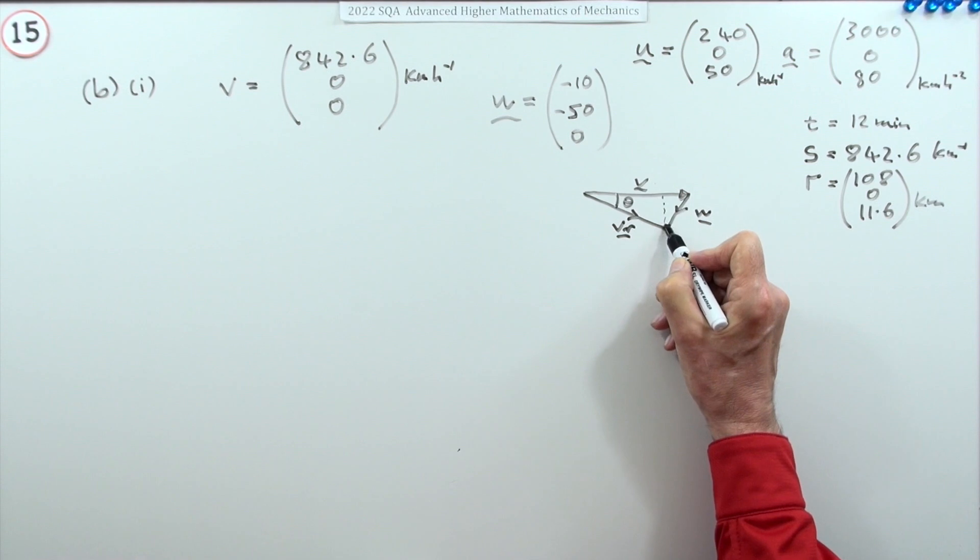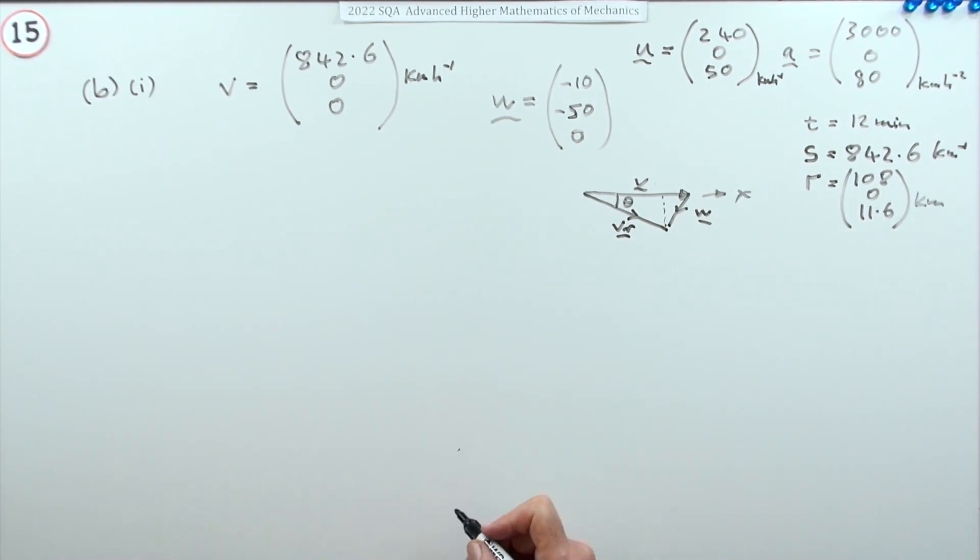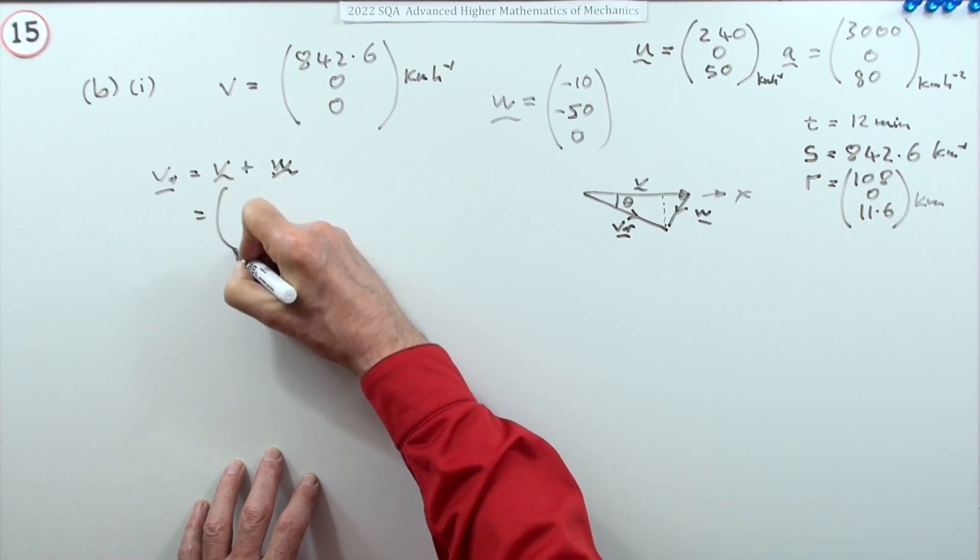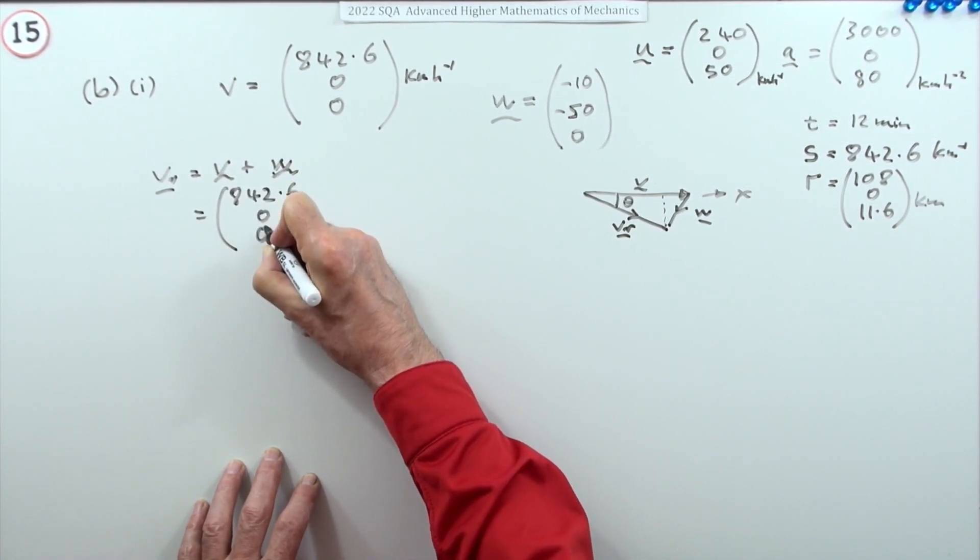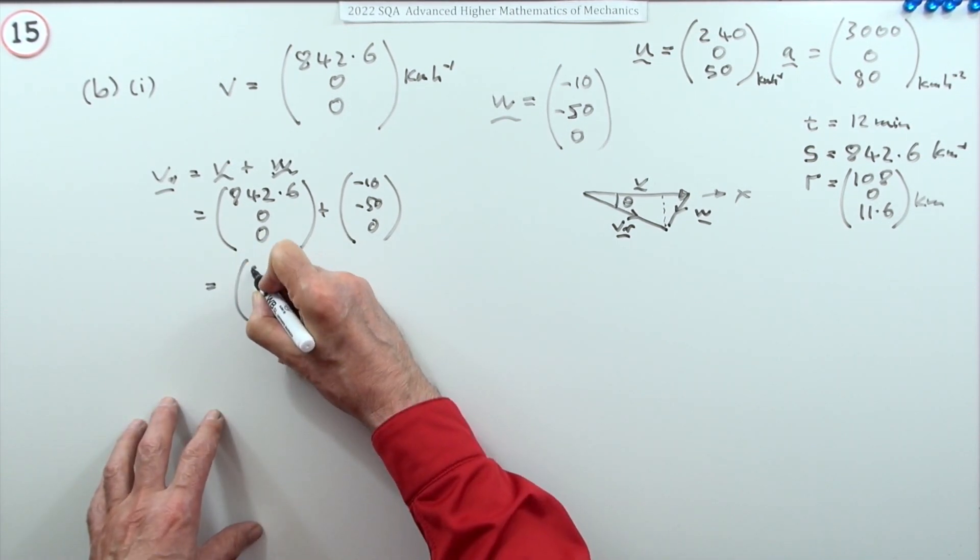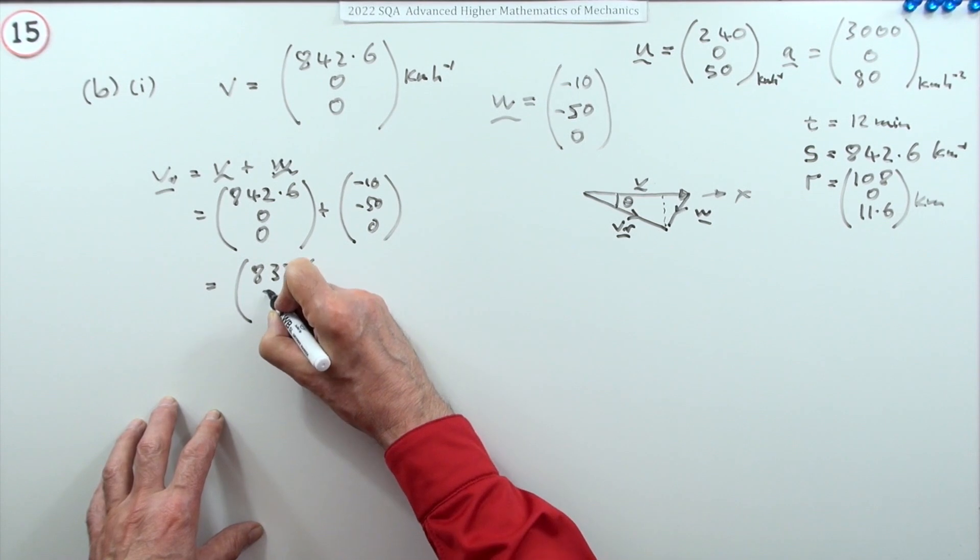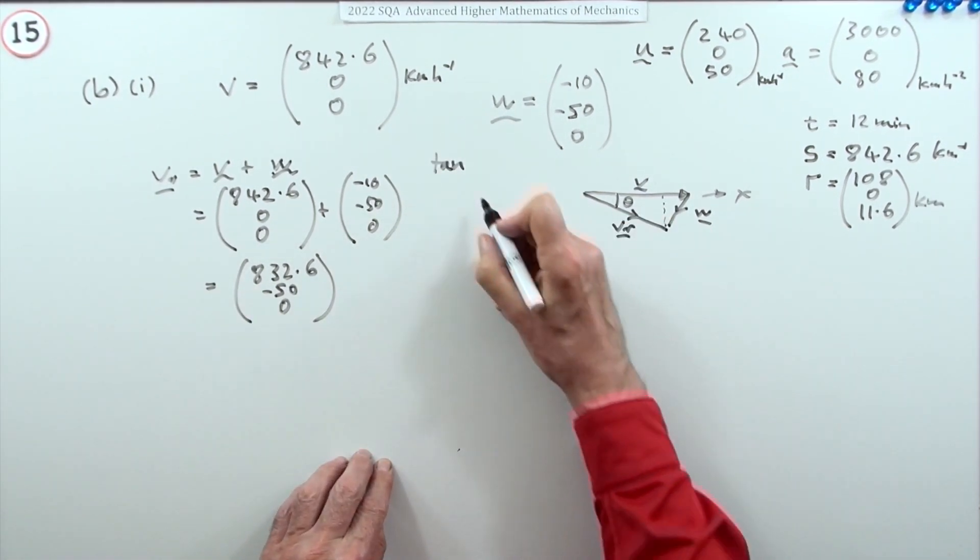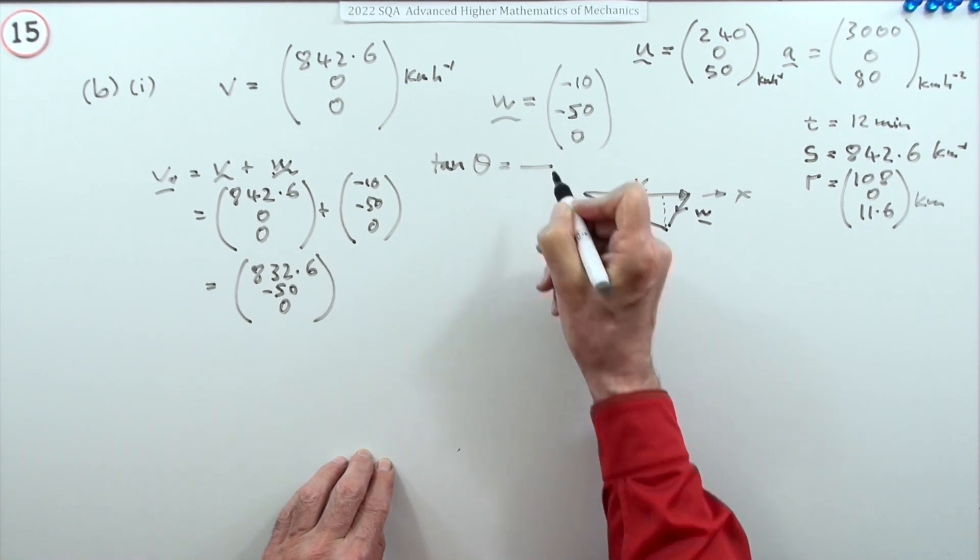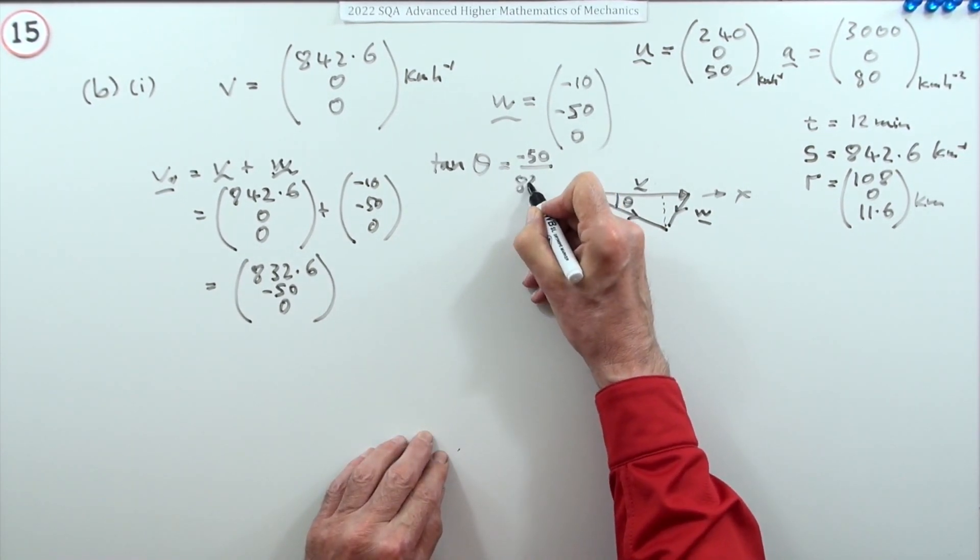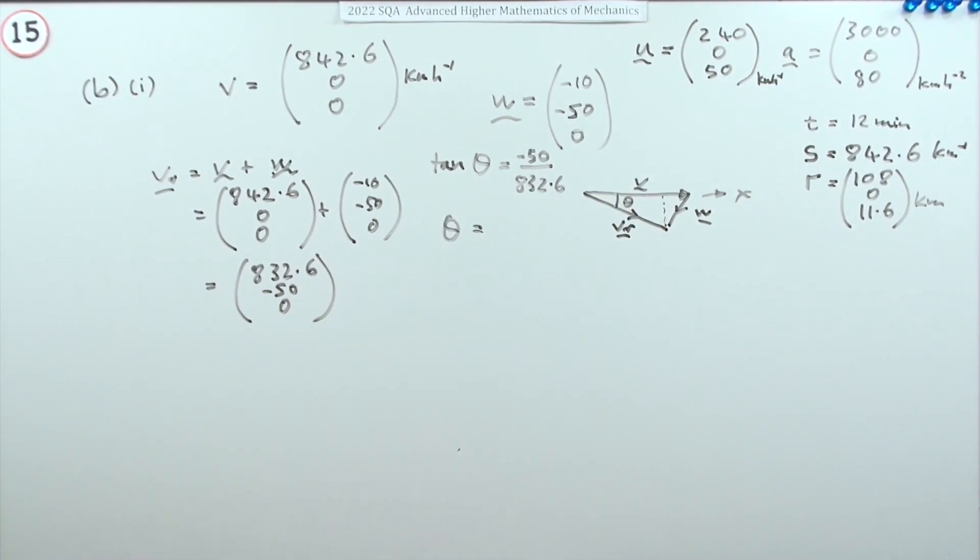You don't need to use a scaling triangle, you can use the components of vr. The resultant velocity is v plus w, so that's 842.6 plus (-10), then (-50), then 0. So the resultant velocity is (832.6, -50, 0). The tangent of the angle will be dividing the components: negative 50 over 832.6. There's a mark for getting this resultant velocity. Popping that in gives negative 3.436 degrees.